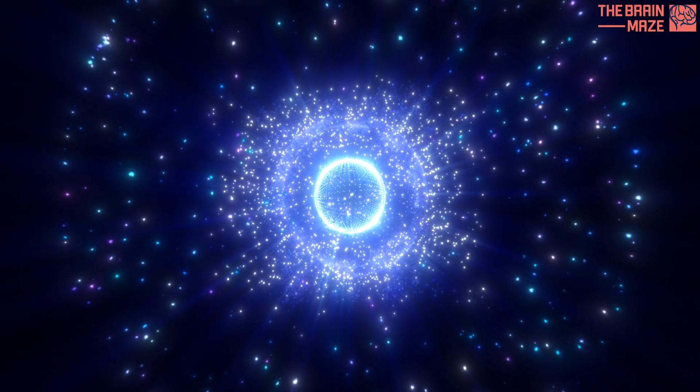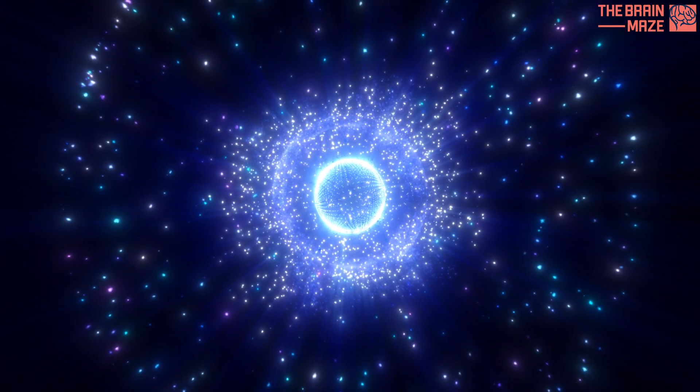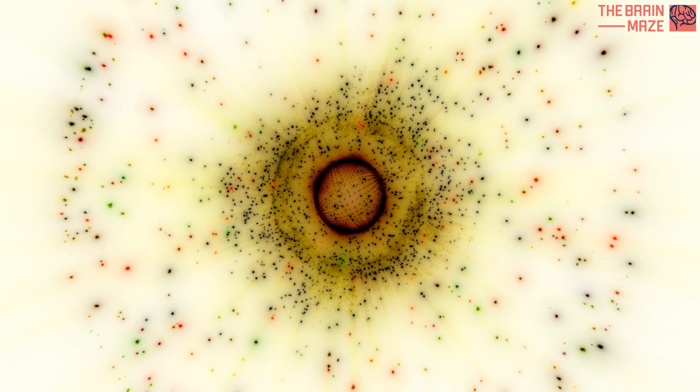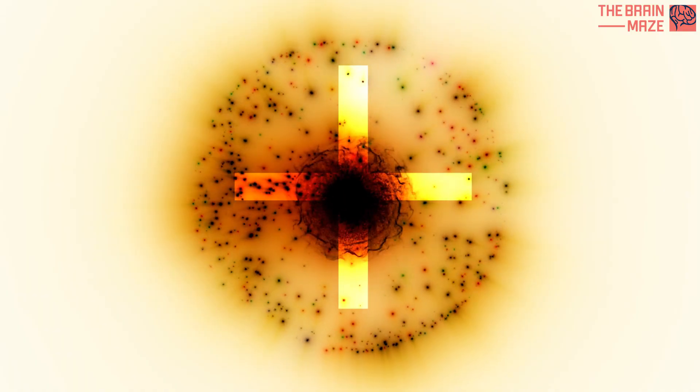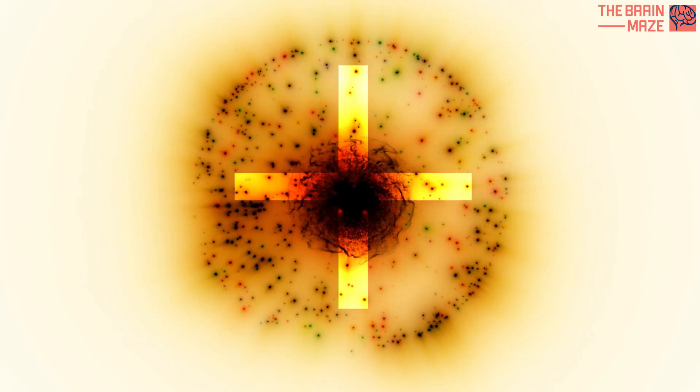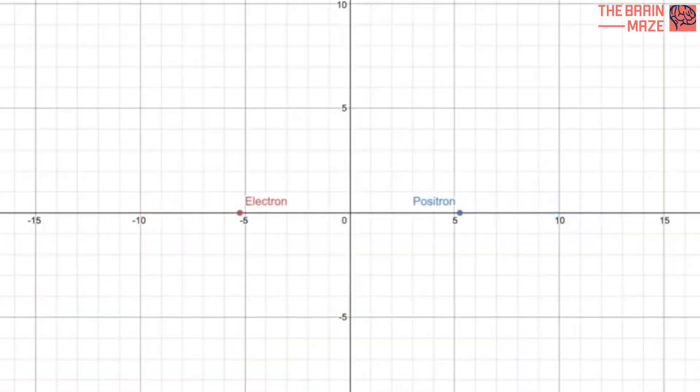Adding another layer to the mystery, electrons have evil twins, positrons. These antimatter particles are identical to electrons in almost every way, except they have a positive charge. This begs the question, why are these fundamental particles so similar, yet opposite?